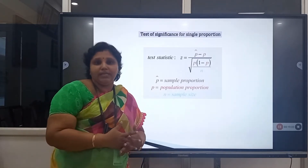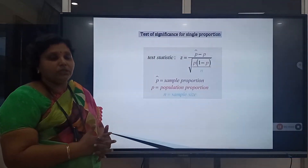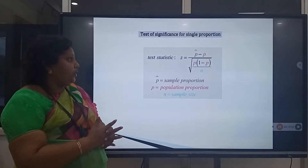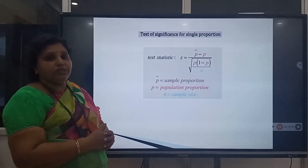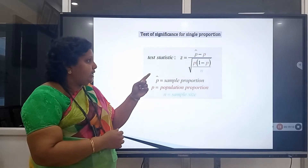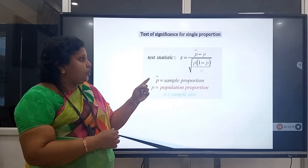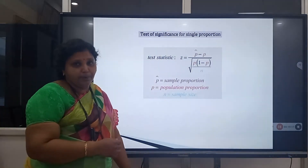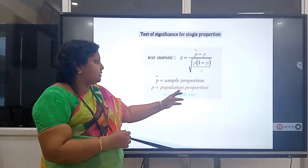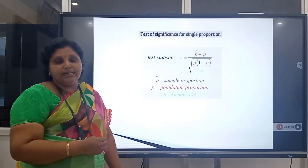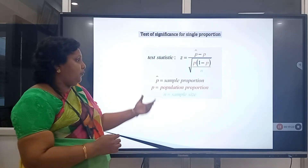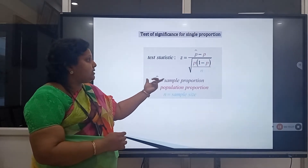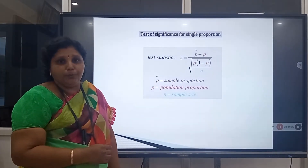Next we are going to see about the test of significance for proportion. The test statistic for single proportion is Z = (p̂ − p) / √(p(1−p)/n), where p̂ is the sample proportion, p is the population proportion, and n is the sample size.